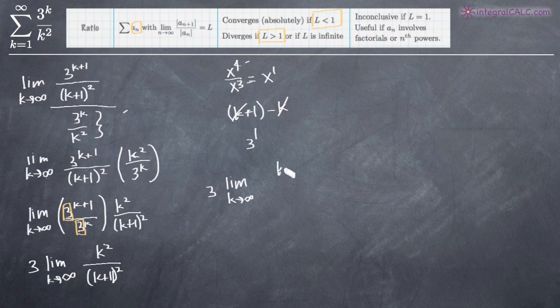So the limit as k goes to infinity of k squared over, and when we multiply out the denominator, which is k plus 1 times k plus 1, we'll get k squared plus 2k plus 1.